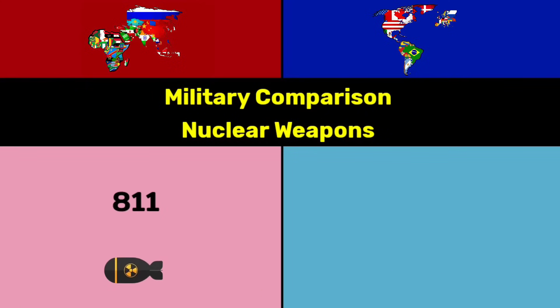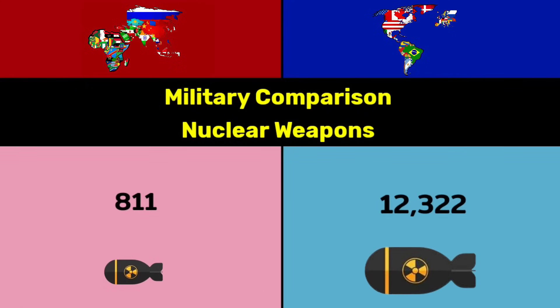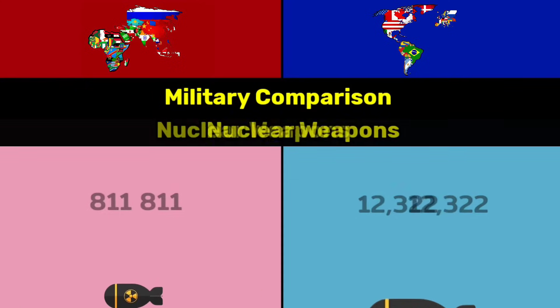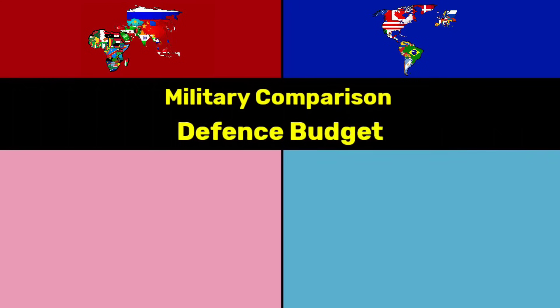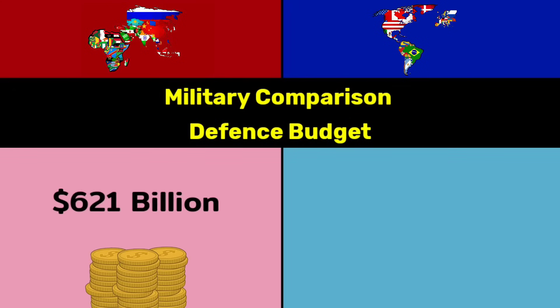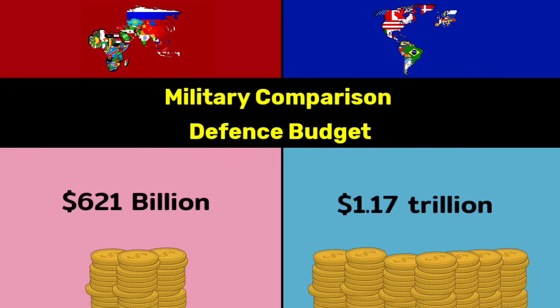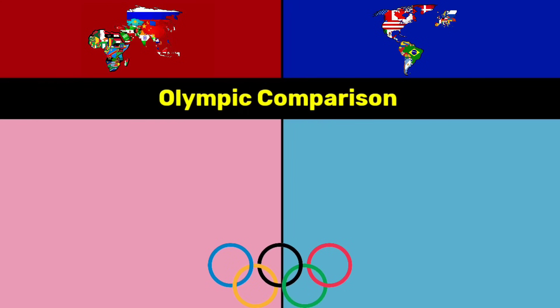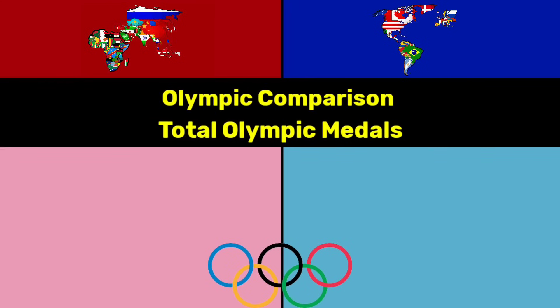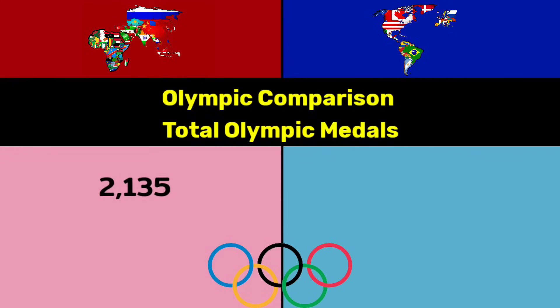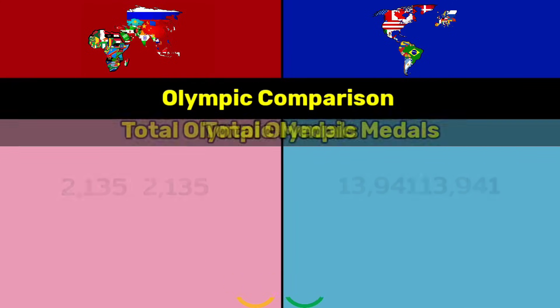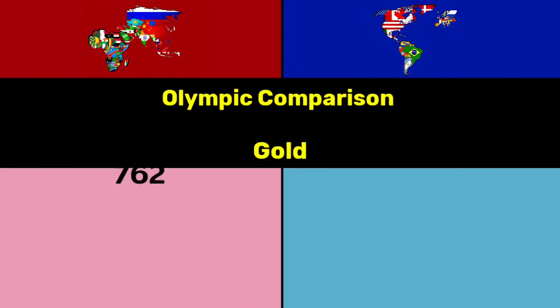Submarines: 363 vs 235. Nuclear weapons: 811 vs 12,322. Defense budget: $621 billion vs $1.17 trillion. Olympic comparison — total Olympic medals: 2,135 vs 13,941.